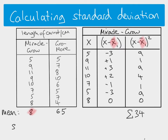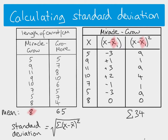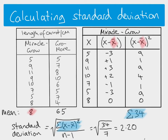The equation for s — standard deviation — is the square root of the sum of (X minus X-bar) squared divided by n minus 1. The sum of (X minus X-bar) squared is 34, n equals 8 so n minus 1 is 7, which gives us a standard deviation of 2.20. That's the calculation for the standard deviation for Miracle Grow.